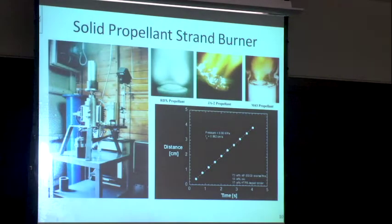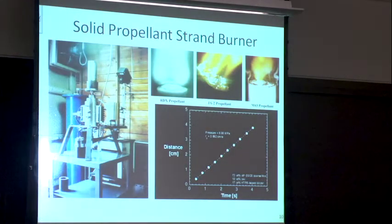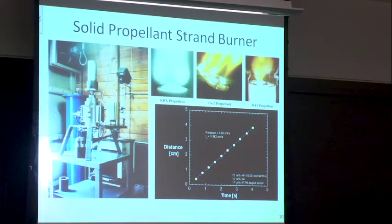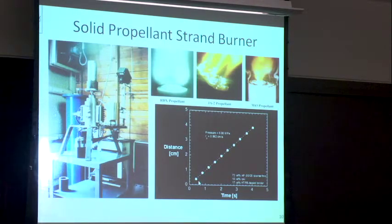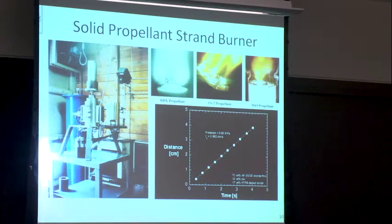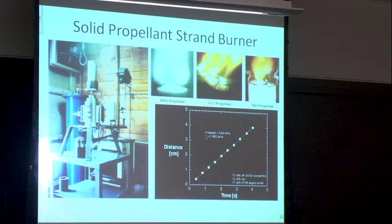Here's an example of that system set up in a reinforced test cell with optical windows. This system goes to about 7,000 psi. Here's an XT example — after the ignition process, you can see steady burning. These are examples of the flame structure above RDX, JA2 (a double-base propellant), and M43 propellant (another RDX-based propellant).